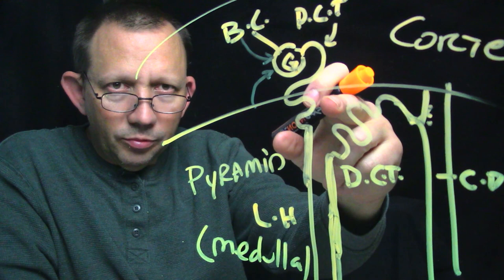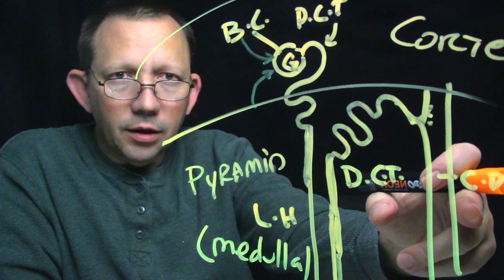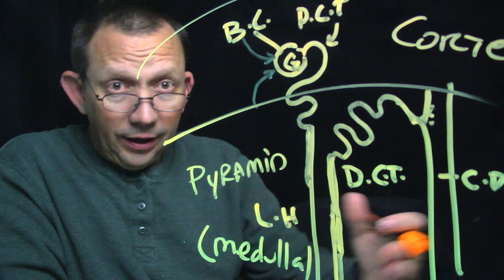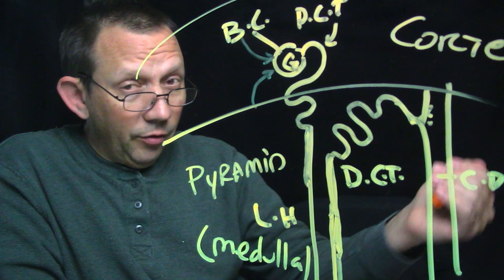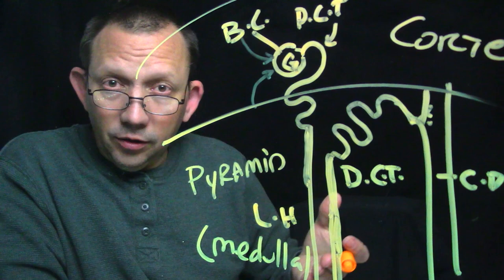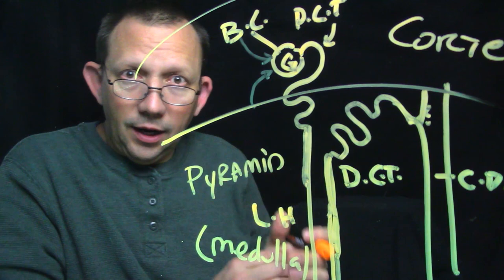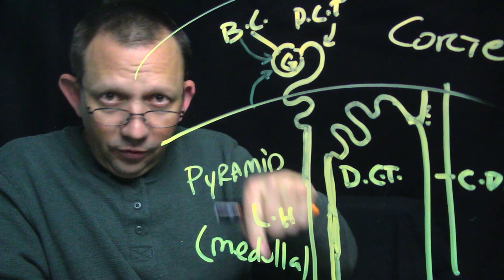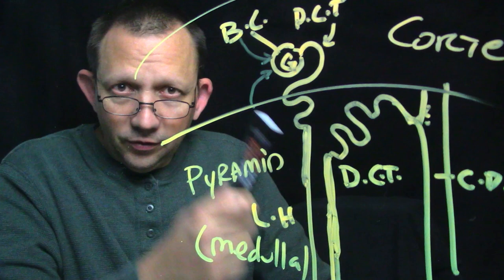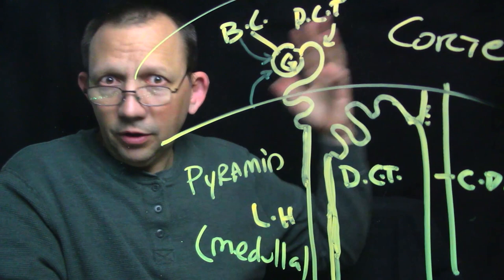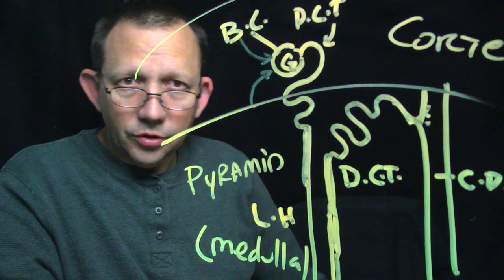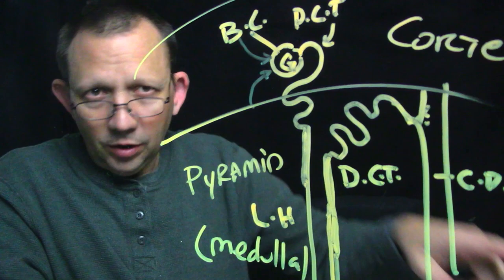The full pathway: proximal convoluted tubule, loop of Henle, distal convoluted tubule, to the collecting duct. The collecting duct goes down eventually to your minor calyces and your major calyces, then to the renal pelvis, then out through the ureter — down that ureter in your back — and goes into the back of the urinary bladder. The bladder is distensible, so it stretches, and then the detrusor muscle will squeeze and push urine out through first the involuntary sphincter, and then the voluntary sphincter — where you can enjoy your micturition reflex.